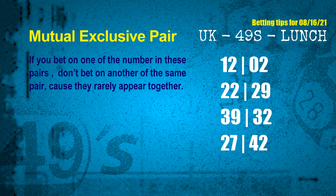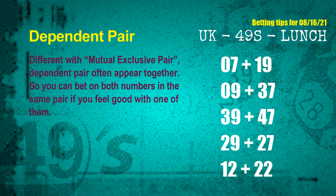Now we have some following ones and ball colors. Here are some tips to increase hit odds. First, mutual exclusive pairs — these numbers both match following ones and colors, but they rarely appear together, so if you bet on one, don't bet the other in the same pair. The mutual exclusive pairs for next draw are: 12 & 02, 22 & 29, 39 & 32, and 27 & 42. Dependent pairs are numbers often drawn together in one draw — you can bet on both. The dependent pairs are: 07 & 19, 09 & 37, 39 & 47, 29 & 27, and 12 & 22.